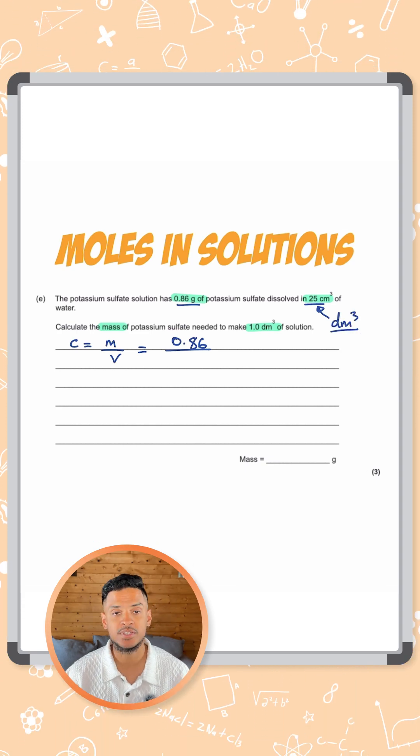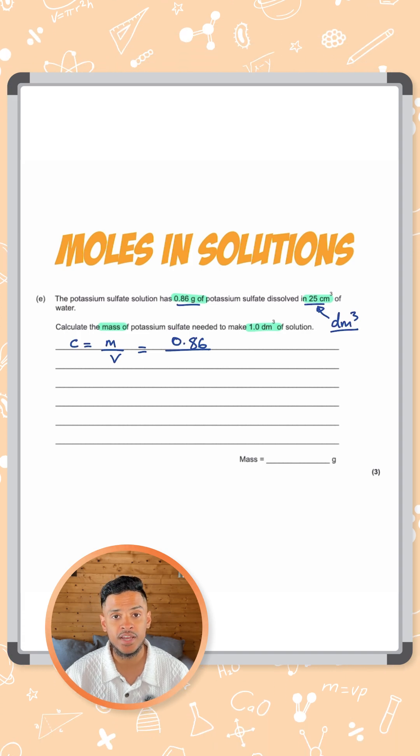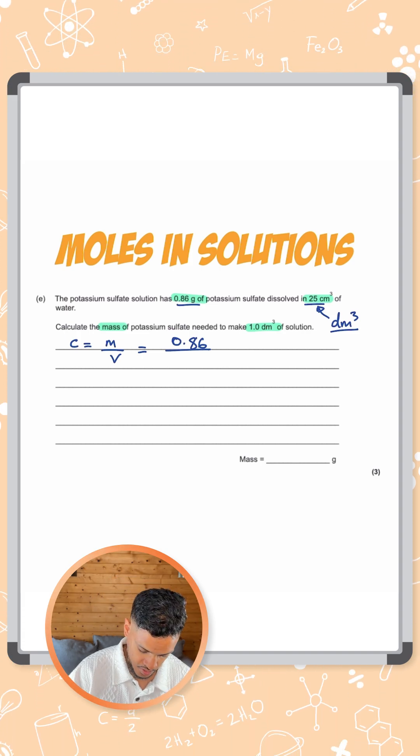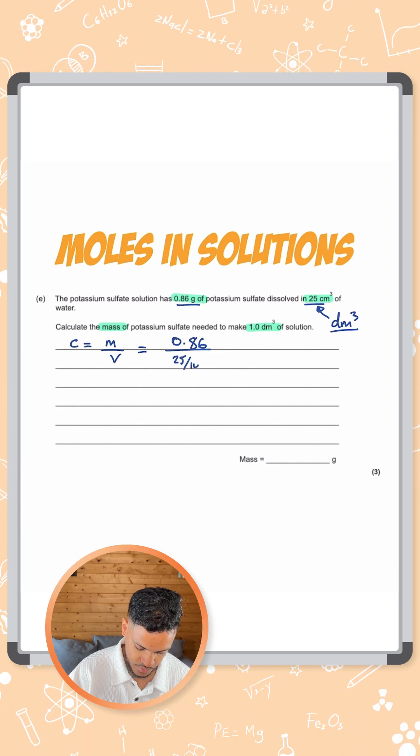How do you convert centimeters cubed into dm cubed? What you need to do is divide it by a thousand. So you're going to do 0.86 divided by 25 over a thousand.